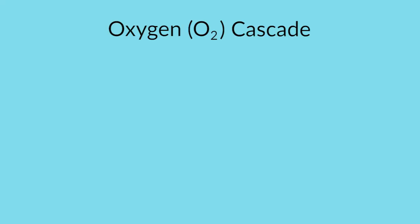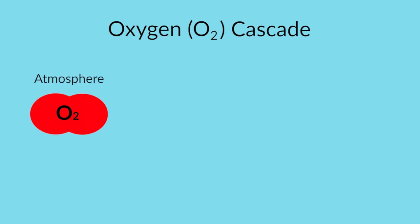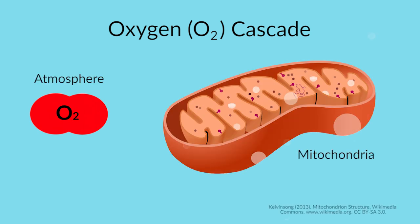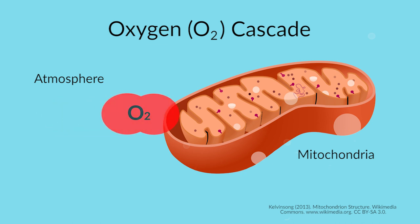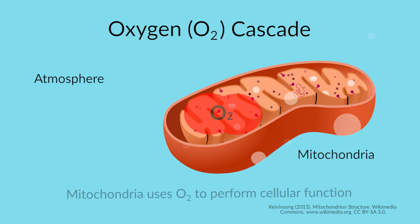So first, let's start with something called the oxygen cascade. We're going to follow the oxygen molecule from the atmosphere all the way to the mitochondria. After all, delivery of oxygen — your job is to get it from the atmosphere to the mitochondria so that the mitochondria can utilize nutrient substrates to do cellular function.